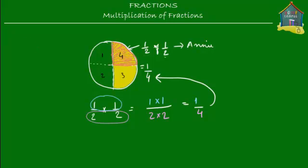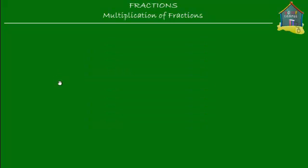Let me take another example. I want to find out what is two-thirds of three-fifths — which in other words is two-thirds times three-fifths, or two-thirds multiplied by three-fifths.